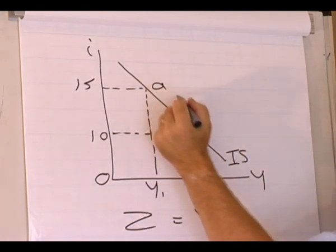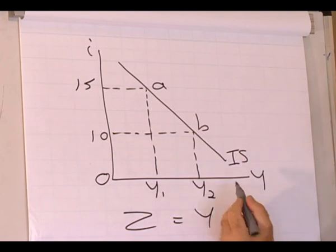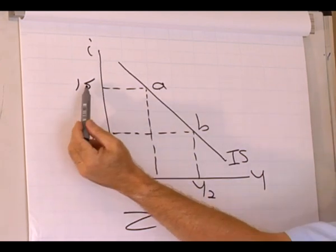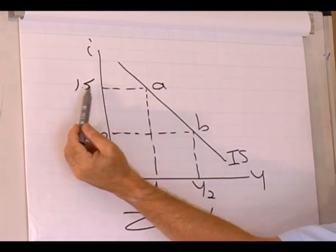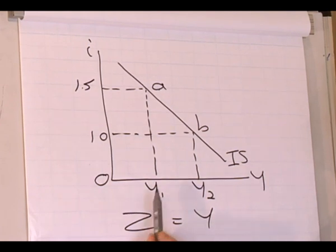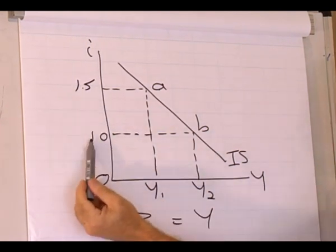Now if we compare point A to point B, we'll see that at A the interest rate is 15%, output level Y1. At B the interest rate is lower.